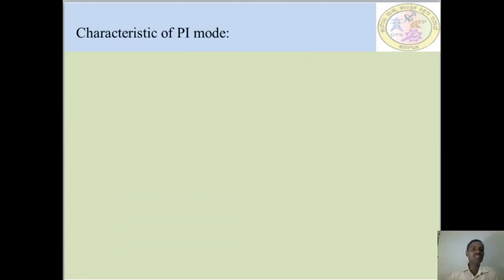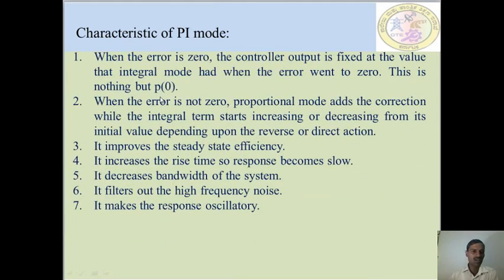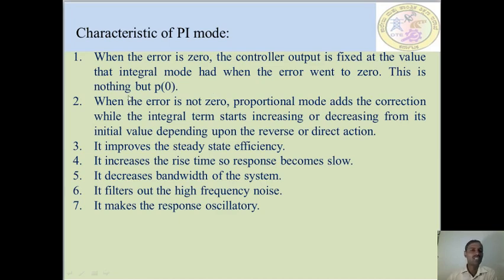The characteristics of the proportional integral mode controller are as follows. First, when the error is zero, the controller output is fixed at the value that the integral mode had when the error went to zero — this is P(0). Second, when the error is non-zero, the proportional mode adds the correction while the integral term starts increasing or decreasing from its initial value depending upon the reverse or direct action.